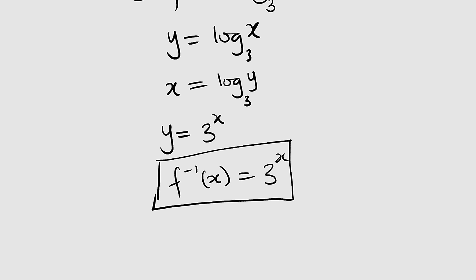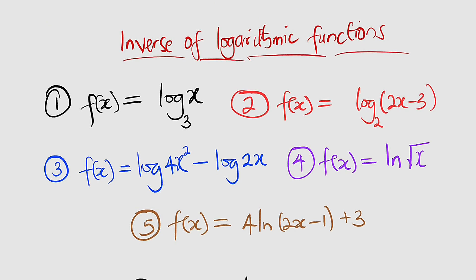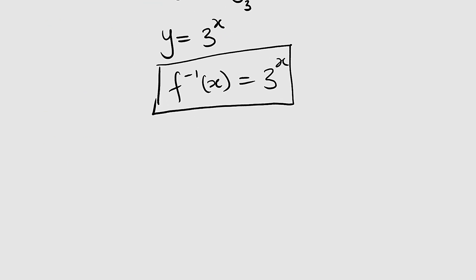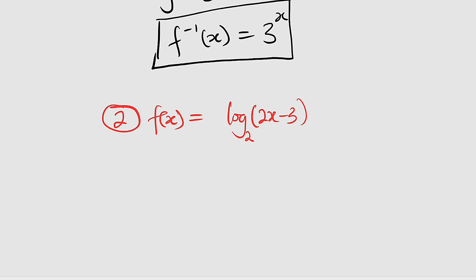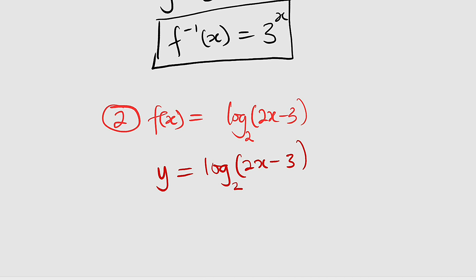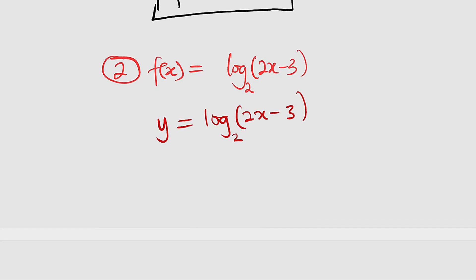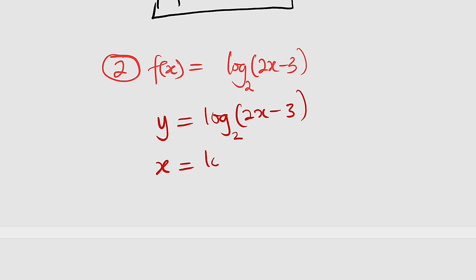Now let us take the second problem. The second problem is f of x equal to log of 2x minus 3, base 2. Let us replace f of x with y. So we have y equal to log of 2x minus 3, base 2. Secondly, we are going to switch y and x. So we have x equal to log of 2y minus 3, base 2.